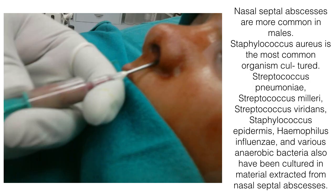Nasal septal abscesses are more common in males. Staphylococcus aureus is the most common organism cultured, but strep pneumoniae, Streptococcus milleri, Streptococcus viridans, and many others can be cultured if material can be extracted. As shown in the picture on the left, you can simply put a needle in it and drain it — but you would only do this if you were sure it was an abscess. If you do this to a solid lesion, you can aggravate it, make it bigger, and make it bleed a lot, so you wouldn't do this unless you were sure of the diagnosis.